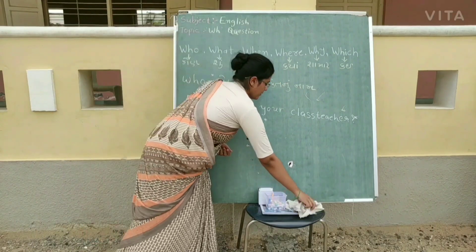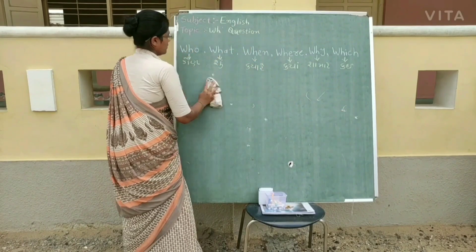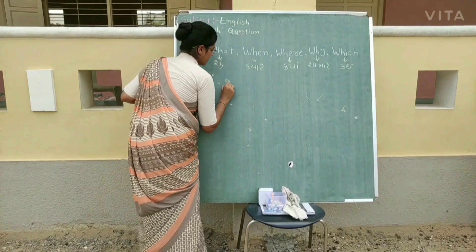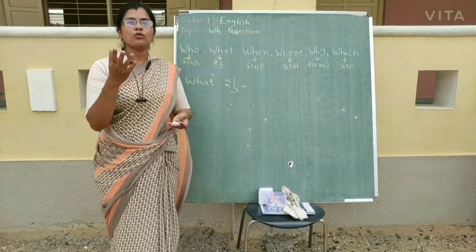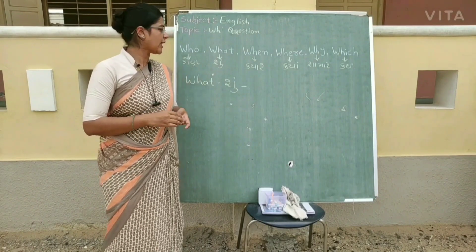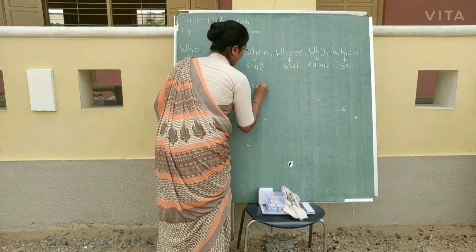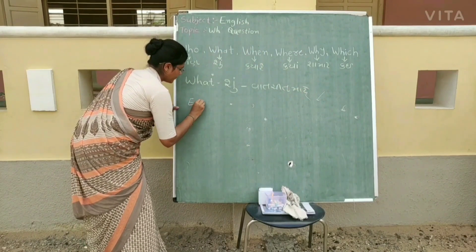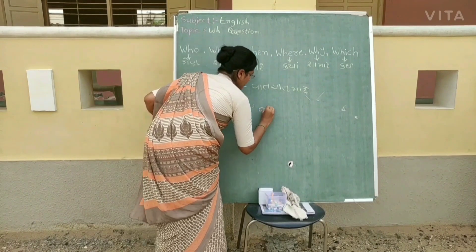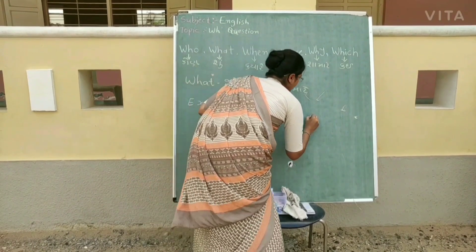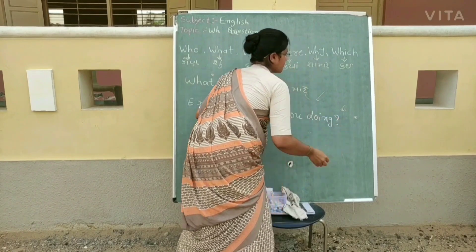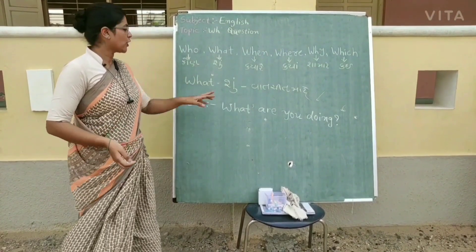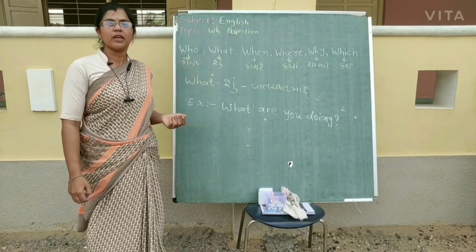Who થી પ્રશ્ન થાય. હવે What — જ્યારે આપણે વ્યક્તિ શું કરે છે, શું ખાય છે, શું કામ કરે છે એ પૂછવું હોય ત્યારે What નો ઉપયોગ કરીએ. ઉદાહરણ: What are you doing? — હું ખાઈ રહ્યો છું, જમી રહ્યો છું.